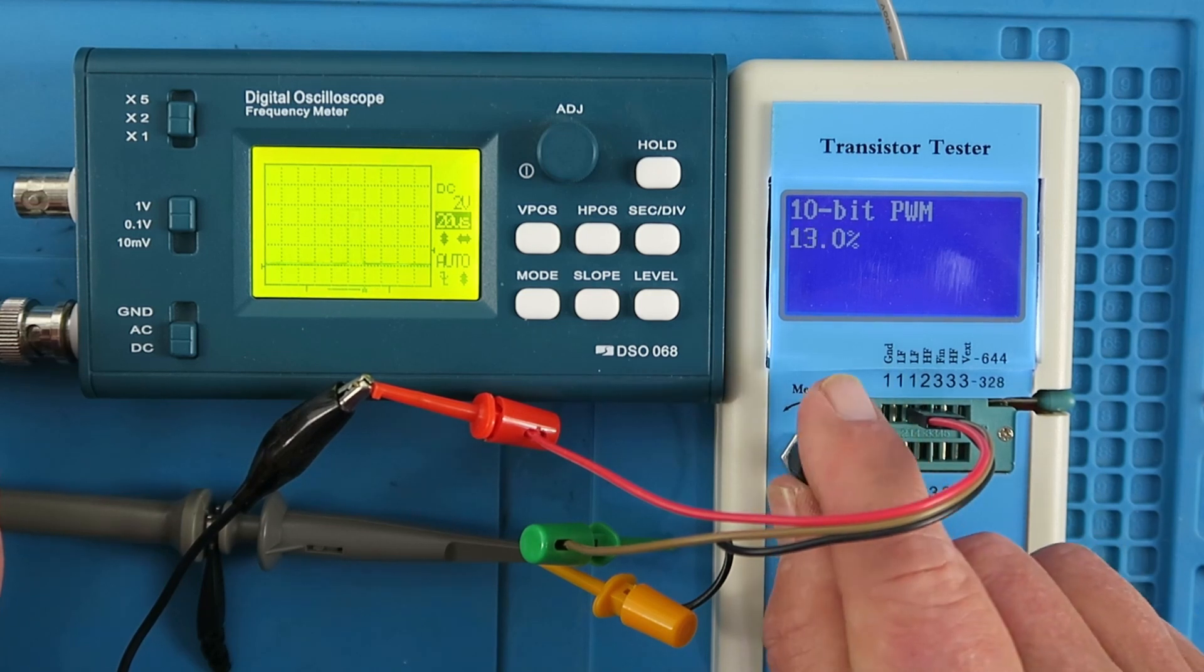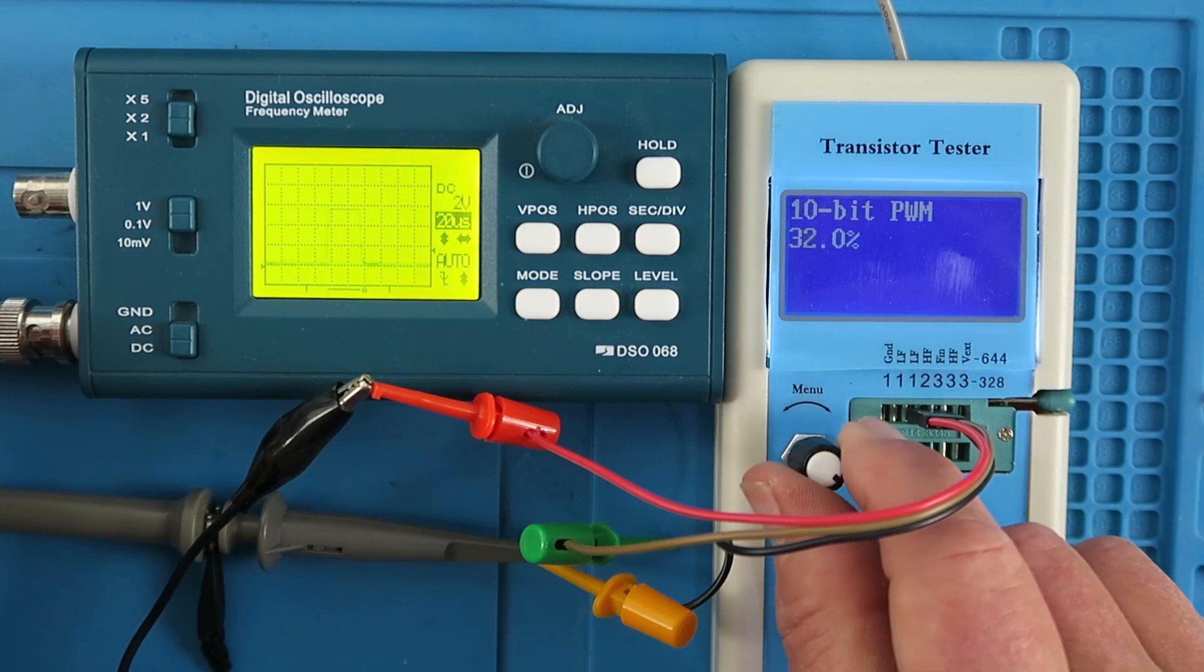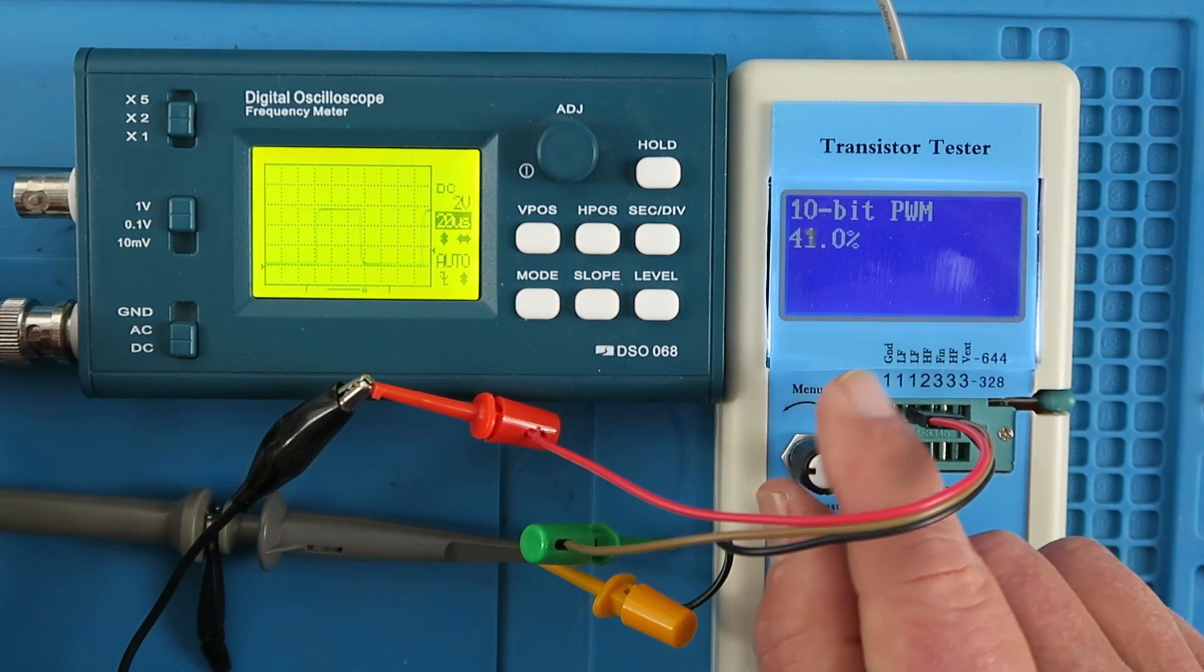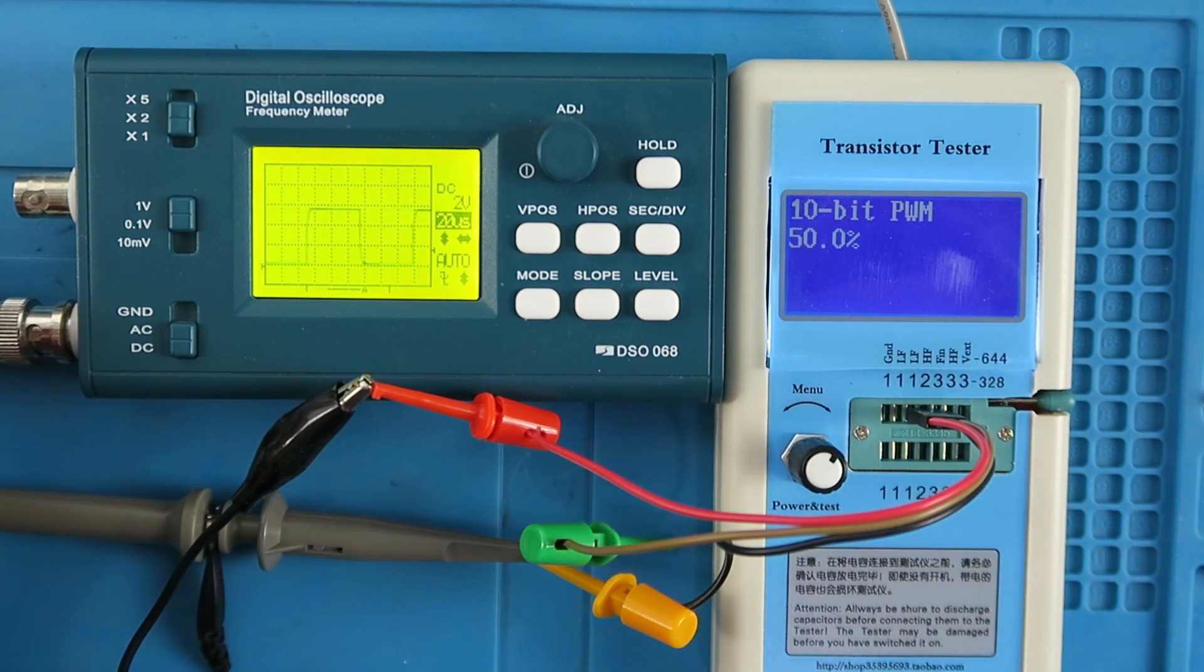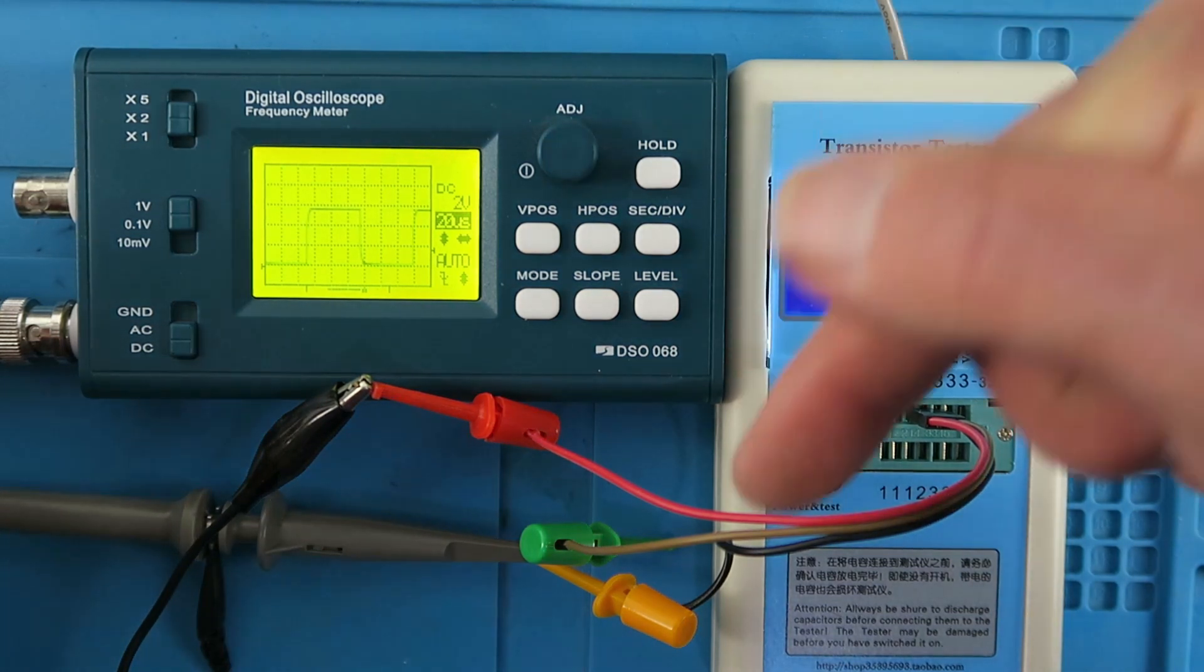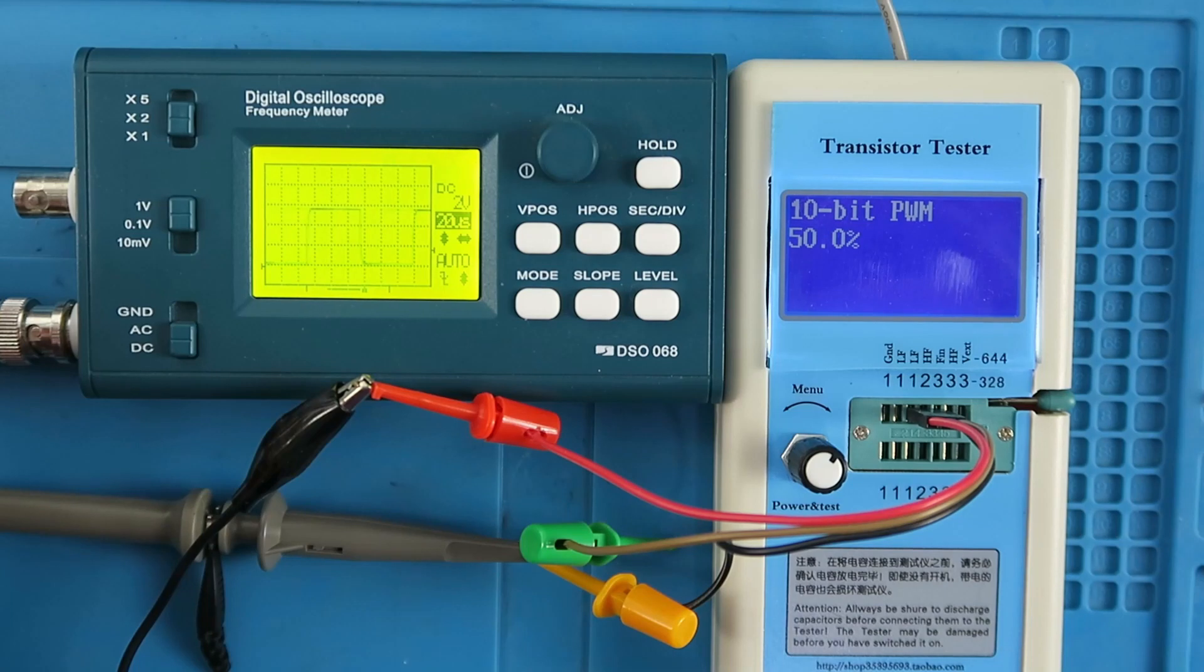Now quite what use this is, I'm not entirely sure. Pulse width modulation is normally used perhaps in the control of a lamp or a motor to change the speed or the brightness. Quite why they've implemented it here, I know not. If you'd know, then please tell me in the comments.